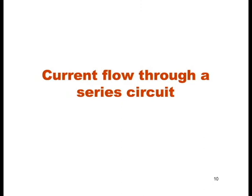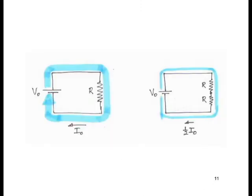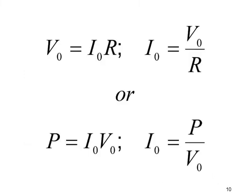The next topic is current flow through a series circuit. The diagram on the left shows a single loop circuit with a battery and current flowing through a single resistor. The current is denoted I sub zero or I naught. You can find the current depending on the information given.